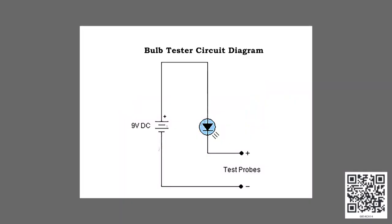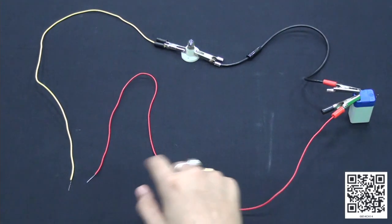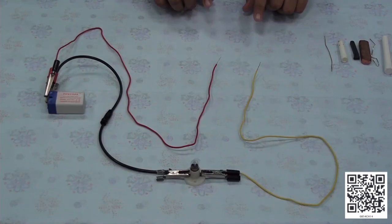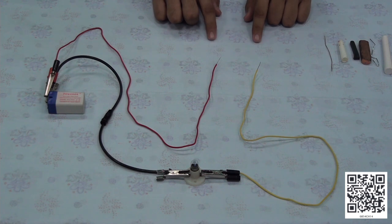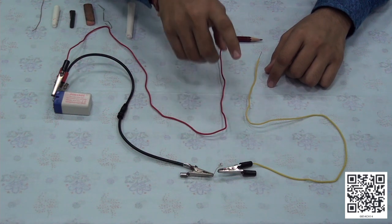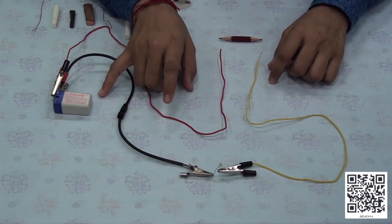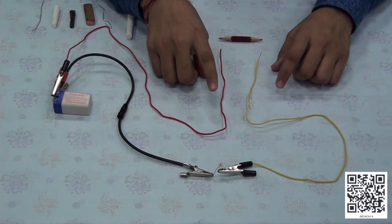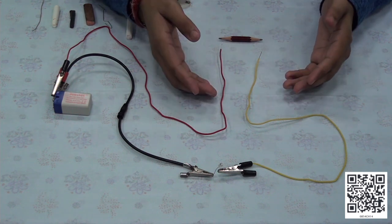The connections are made as shown in the diagram. From the battery, one wire is connected to the bulb, the other side of the bulb is connected to a free end, and the other side of the battery is also connected to a free end — this is our tester. Note that the positive of the battery must be connected to the positive of the LED, and the negative of the battery will be connected to the negative through the conductor or material being tested.